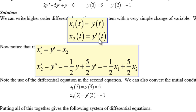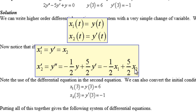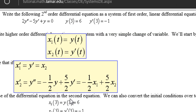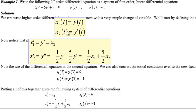For the second equation, since x2(t) = y'(t), differentiating both sides gives x2' = y''. From the original equation, rearranging gives y'' = (5y' - y) / 2. Substituting x1 for y and x2 for y', we get x2' = -½·x1 + 5/2·x2. We can also convert the initial conditions in terms of x1 and x2.